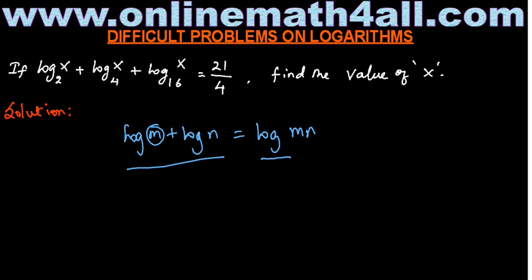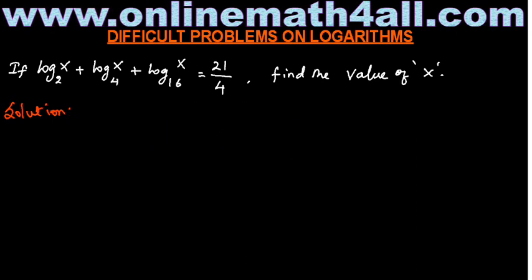However, to apply this fundamental law, there is a condition: both logarithms must have the same base. If the base of the first logarithm is 10, the base of the second must also be 10. In our problem, even though three logarithms are added, the bases are 2, 4, and 16 respectively — they are not the same — so we cannot apply the fundamental law.